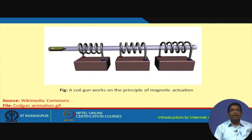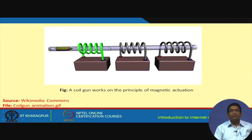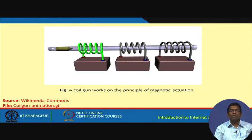This is an example of a coil gun, which works on the principle of magnetic actuation. An electromagnetic field is generated and then the projectile is pushed, and so on. Interestingly, the functioning of hyperloops — which people are talking about at present — is also based on this particular principle.